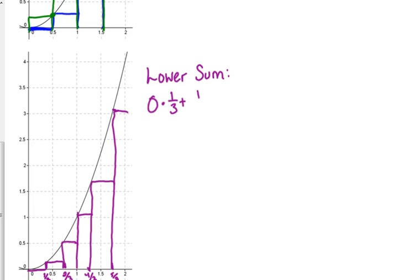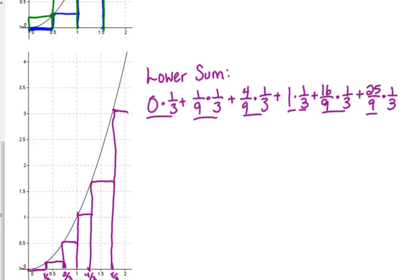The lower sum, the first one is zero times the third. Plus, one-third squared is one-ninth, times the width is still one-third. When we square two-thirds, we get four over nine. Width is still one-third. Plus, the next one is one, so that's one times one-third. Four-thirds squared is sixteen over nine, times one-third. Plus, five-thirds squared is twenty-five over nine, times one-third. So one, two, three, four, five, six. Six rectangles. Now, is there something I can do to this to make my calculations a little less tedious?